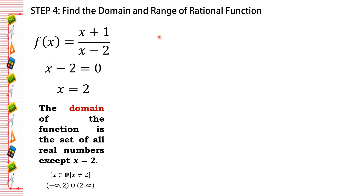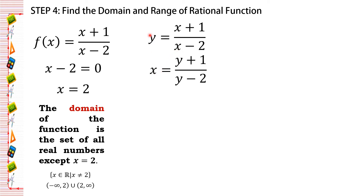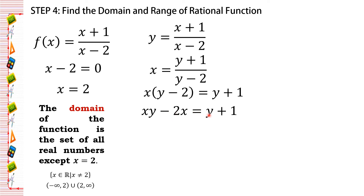Now let's find the range. We change f of x to y, then interchange the variables: y becomes x and x becomes y. After cross multiplication, we multiply x by the quantity y minus 2, giving x times y minus 2 equals y plus 1. Distributing x gives xy minus 2x equals y plus 1.